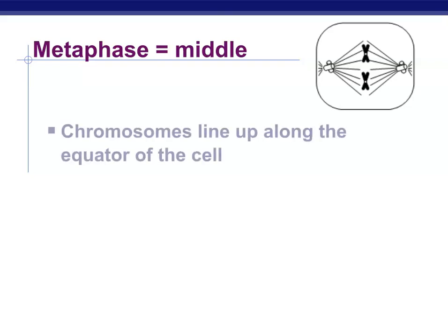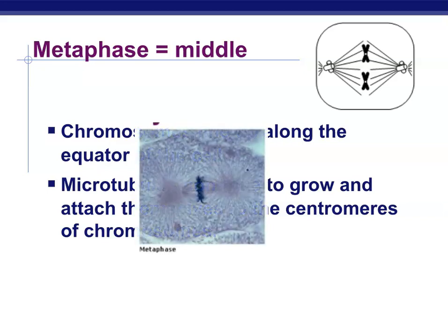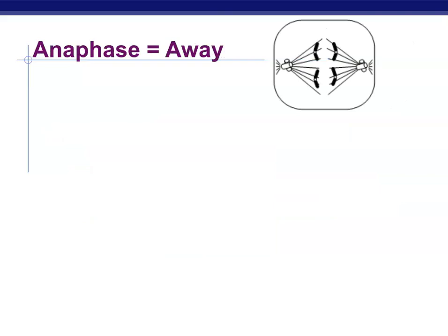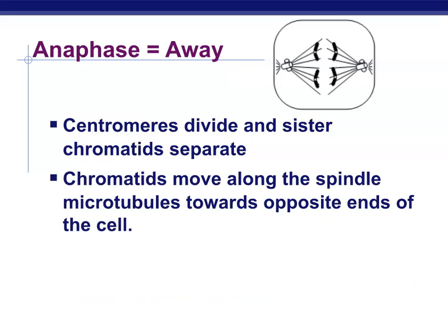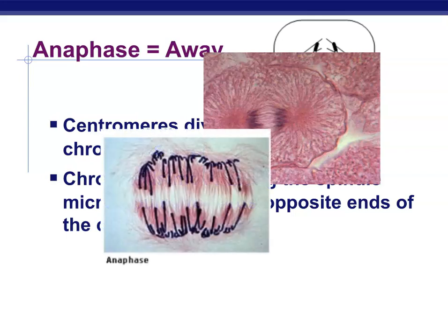In metaphase — the middle — everything lines up in the middle, so chromosomes line up along the equator of the cell. Those microtubules continue to grow and attach themselves to the centromeres of the chromosomes. This one is pretty easy to identify in cell images because you can see that metaphase plate with everything lining up in the middle. In anaphase — I remember A for 'away' — the chromatids separate and are pulled towards opposite poles. It's easy to identify because you can really just see them being pulled towards the edges.